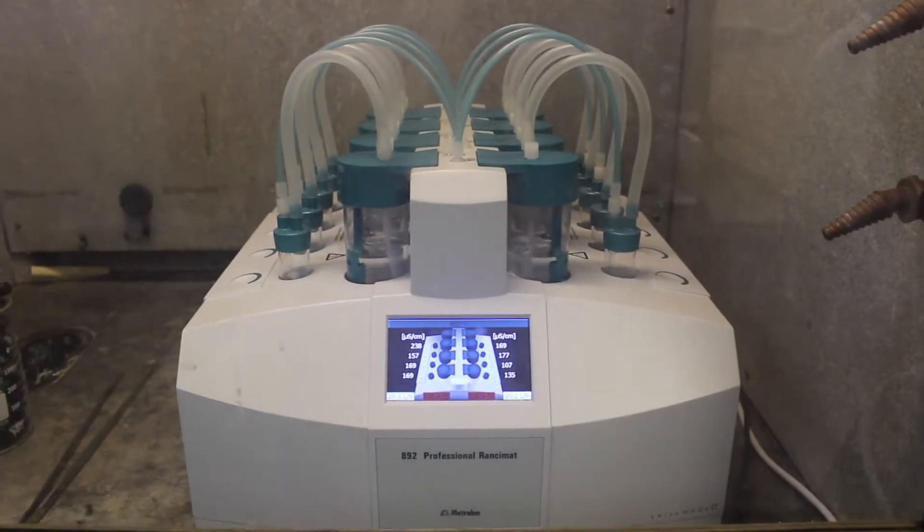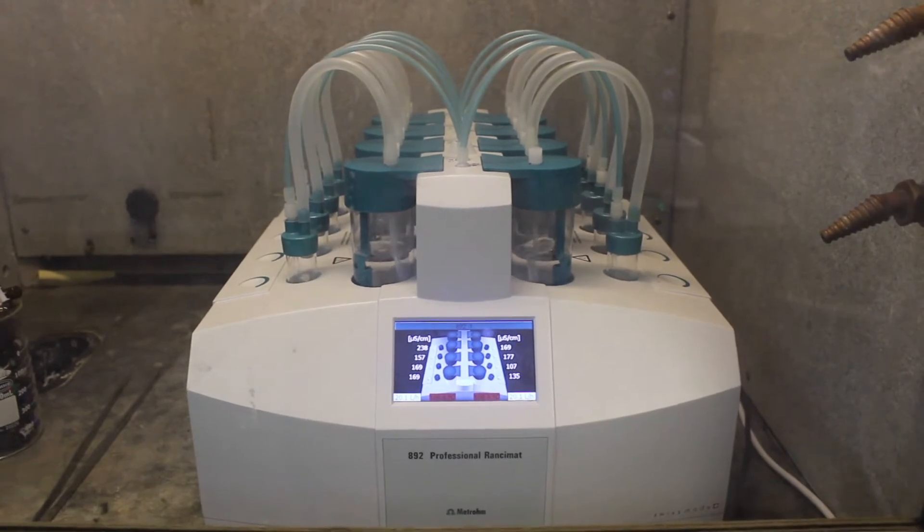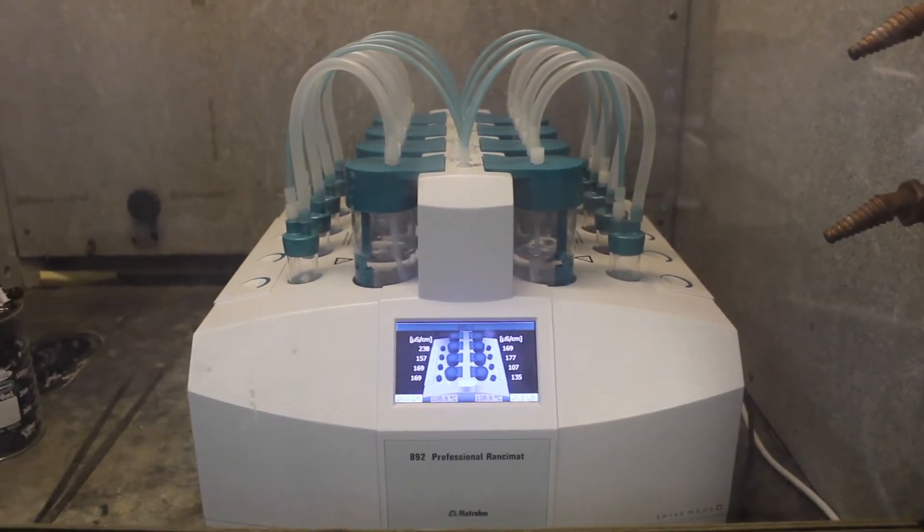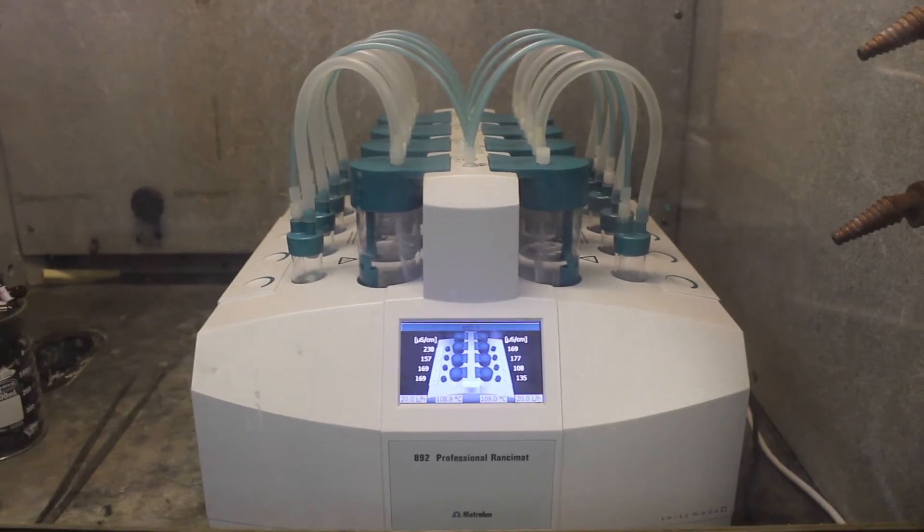Now we are entering our second lab room. This is a Rancimat, and it is a tool to determine oxidation stability based on accelerating the aging process. We have used this instrument for olive oil, fish oil, walnuts, walnut oil, and almonds.